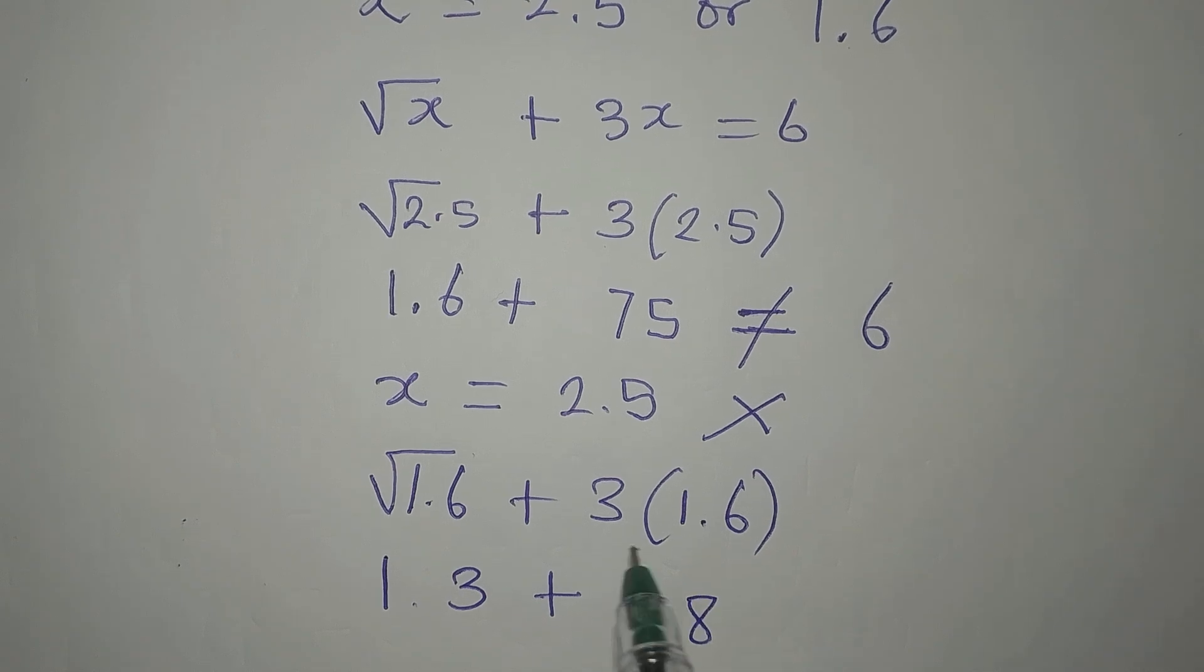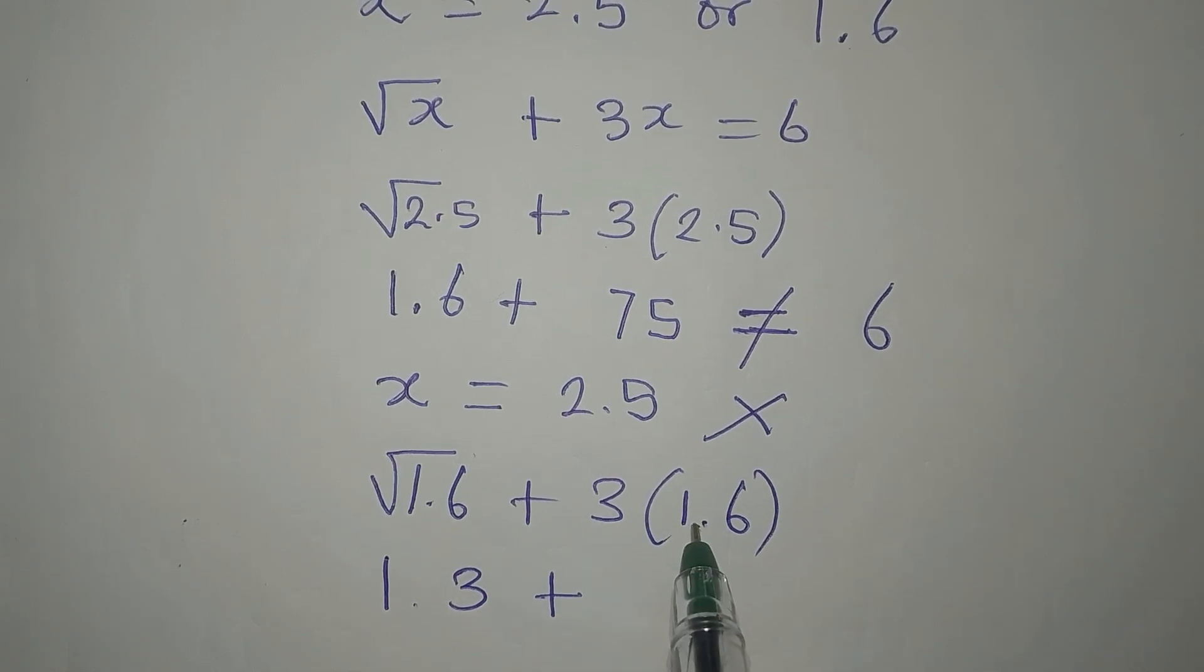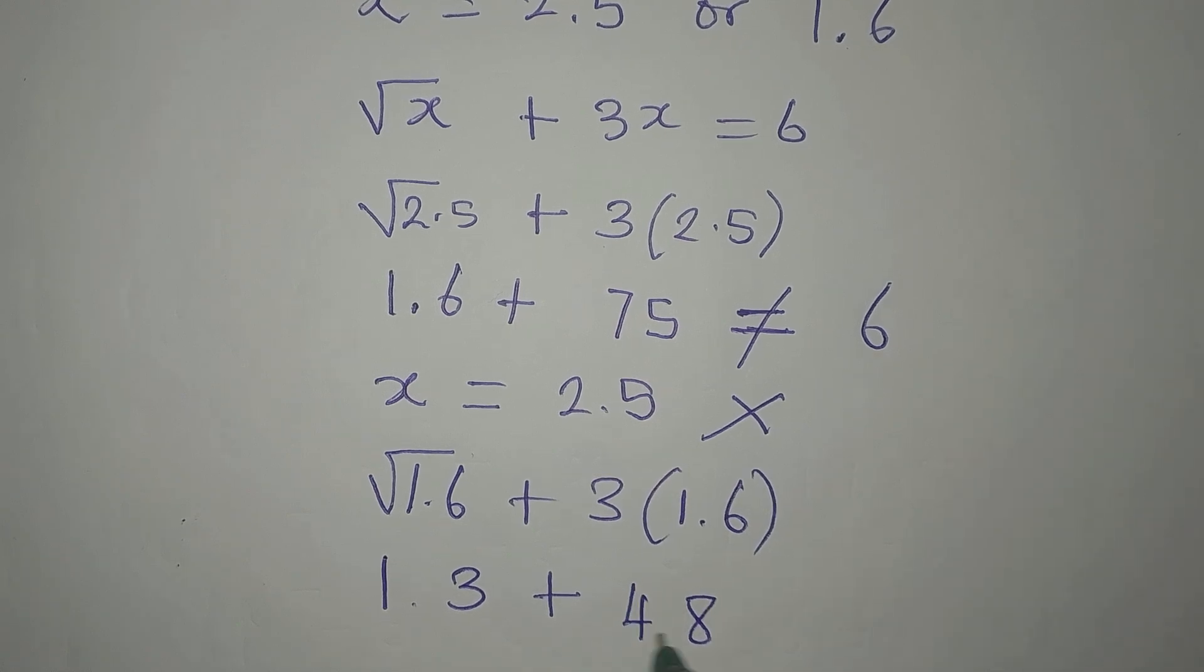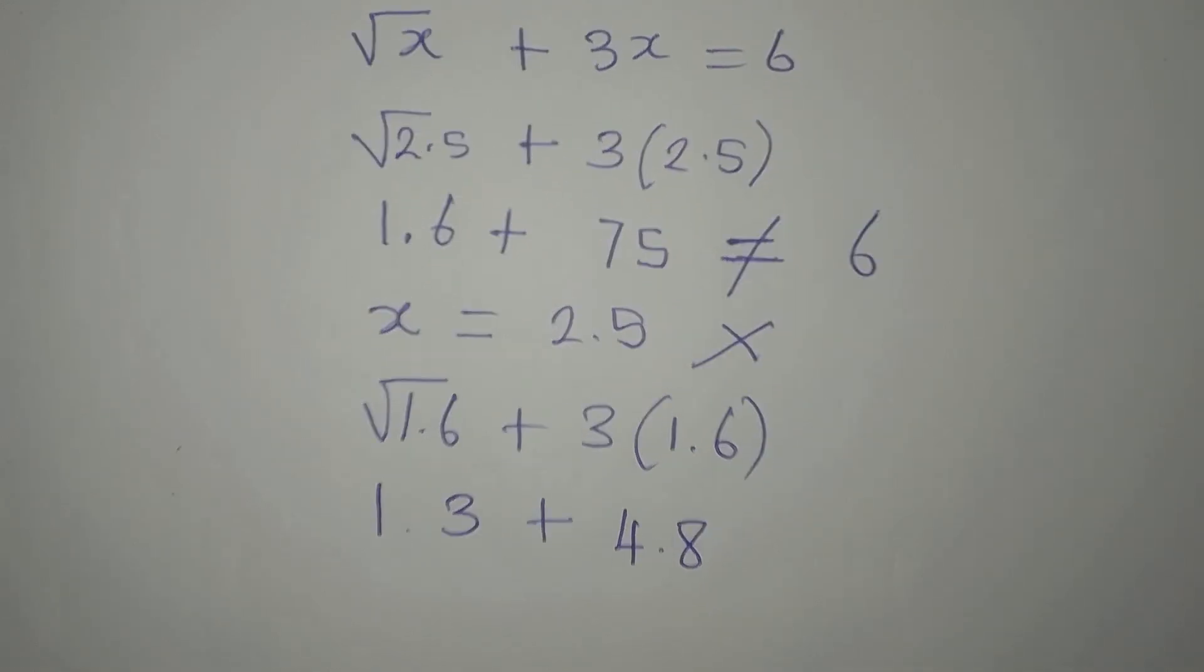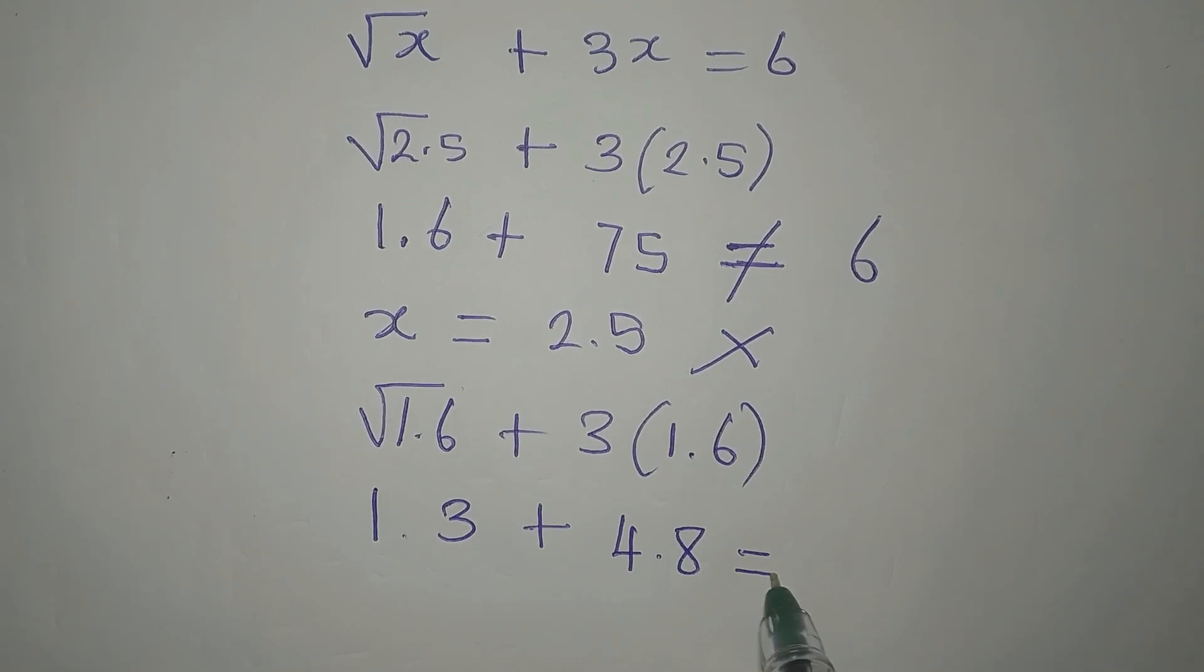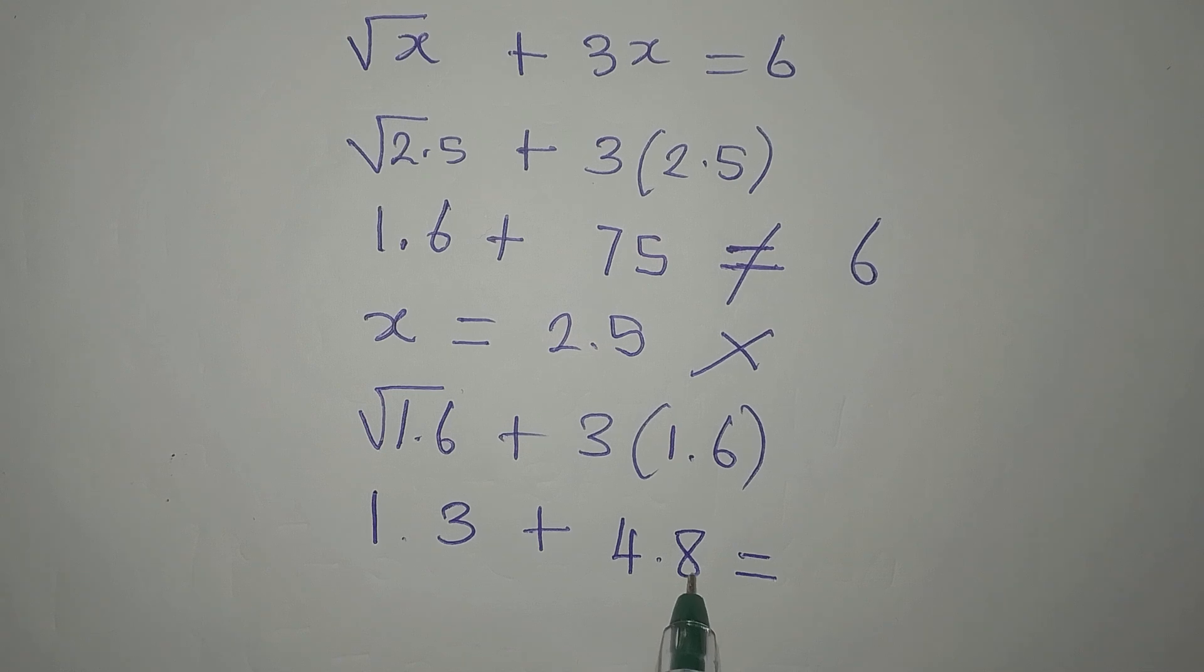Then 3 times 1 is 1, M3 plus 1, we have 4. So we have 4.8. Now, let's add these two and see what we are going to have. 8 plus 3 is 11.